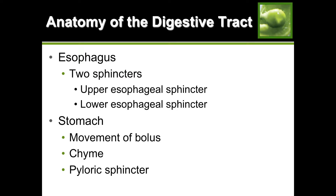Once you swallow, it goes down into your esophagus. The esophagus has two sphincters - smooth muscles that are openings controlling how frequently food passes through. The lower esophageal sphincter sits between the esophagus and the stomach and is always closed unless food comes down the esophagus and stimulates it to open. This is the sphincter responsible for acid reflux or GERD.